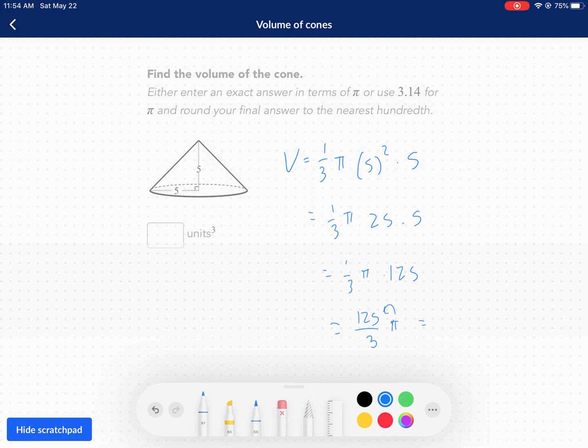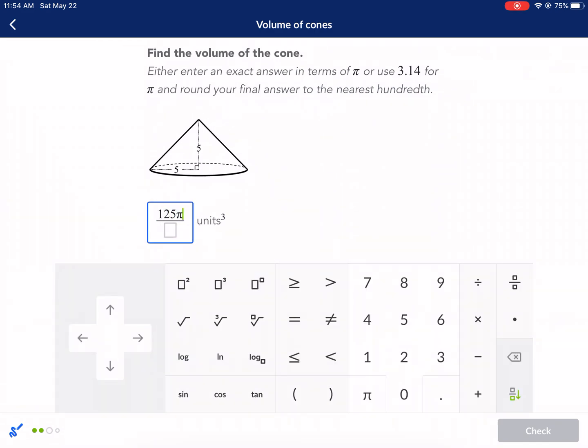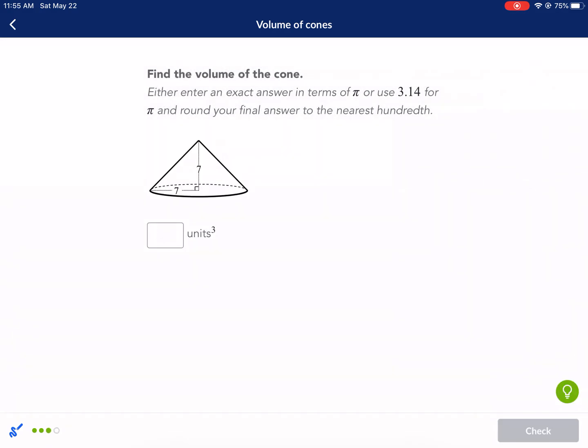So I'm going to go 125 over 3 times pi. And I'm going to put the pi in the numerator actually. 125 pi over 3. I always like putting either the variable or pi in the numerator. It's just a better way to go. 125 pi over 3. Next question.